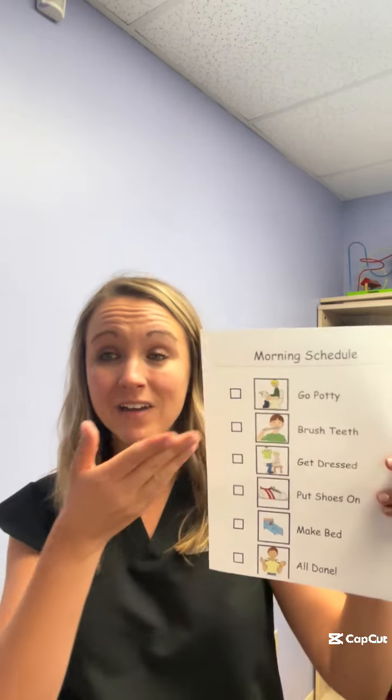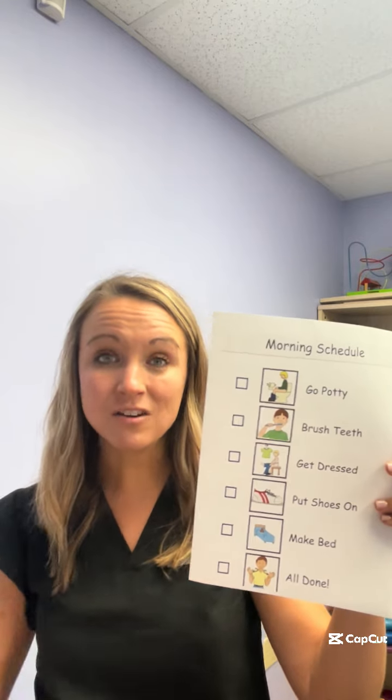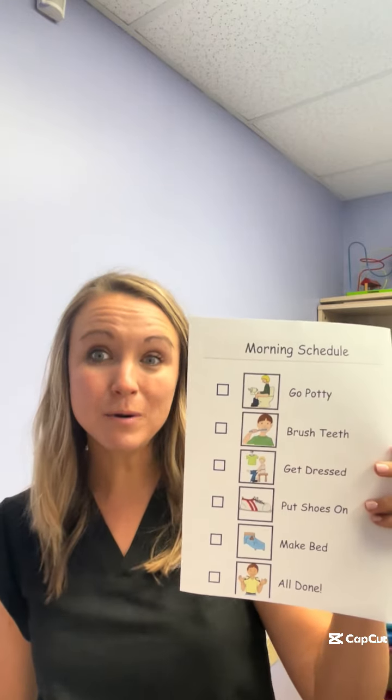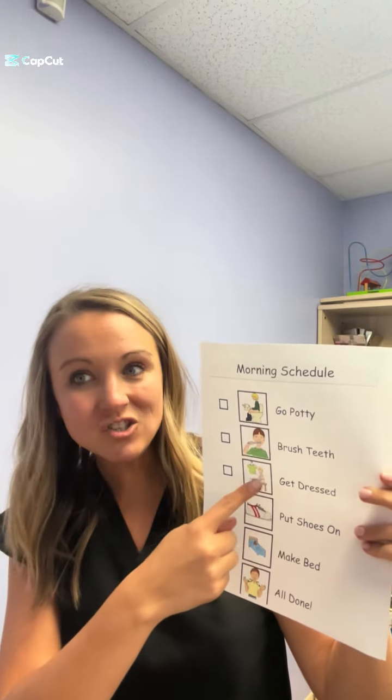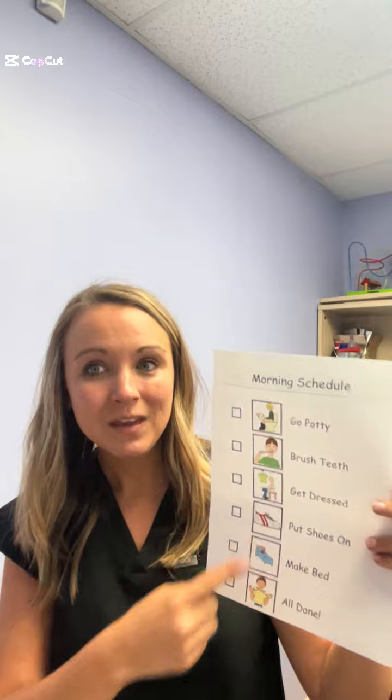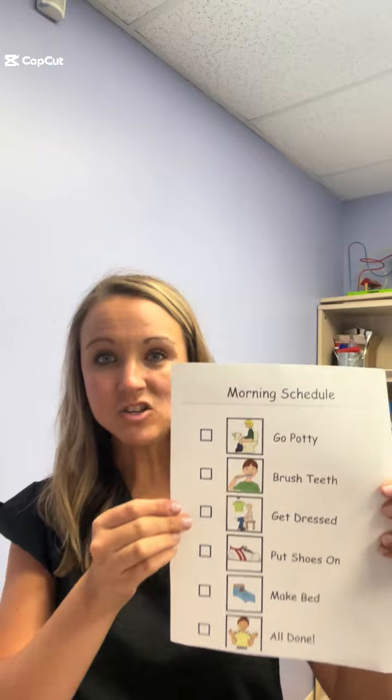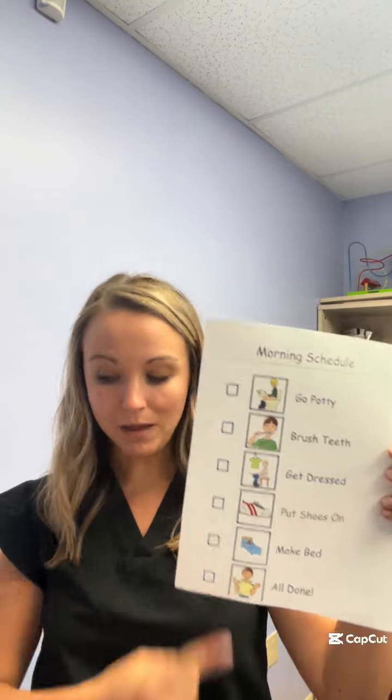Making a visual schedule is easy. First, identify a routine or activity that your child frequently participates in. Find pictures of each step — these can be pictures that you take on your phone or pictures you find on the internet. Arrange the pictures in order from top to bottom or left to right.